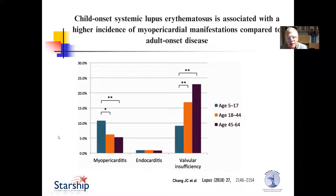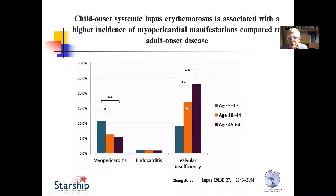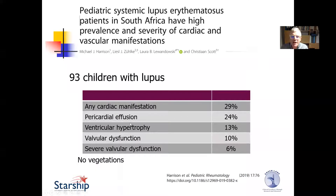This is a large study from the United States — administrative data from discharge codings — with a large number of patients with SLE grouped according to age. The younger age group, the children, tended to present with myopericarditis, which was much commoner than the adult presentation. The adults were much more likely to have valvular insufficiency. So valvular problems are much commoner in adults, and myopericardial problems commoner in children. A report from Cape Town of 93 children with lupus found about 30% had cardiac manifestations, mostly pericardial effusion, with some ventricular hypertrophy and valve dysfunction. None of them had vegetations.